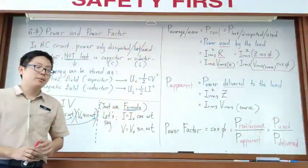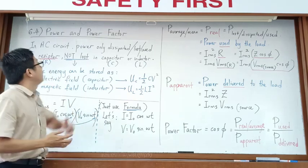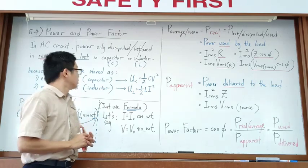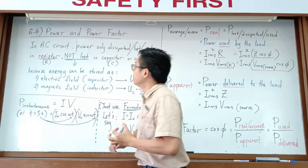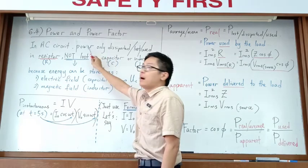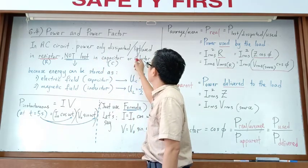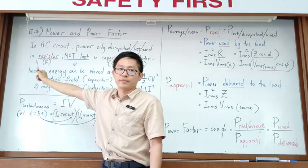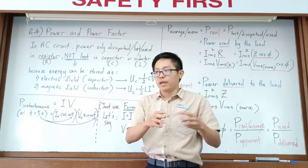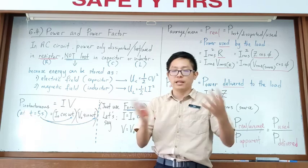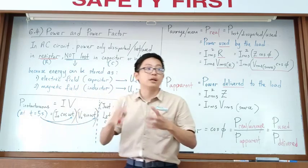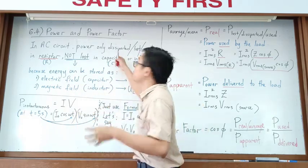Topic 6.4 is about power and power factor — how to calculate power and power factor. In AC circuits, power is only dissipated or used in resistors. The resistor can be a lamp, a fan, or any electrical appliance. Only these electrical appliances, acting as resistors, actually use up the power.